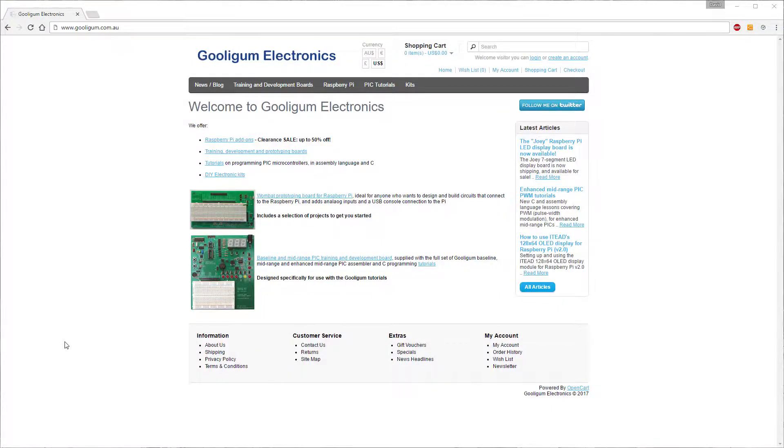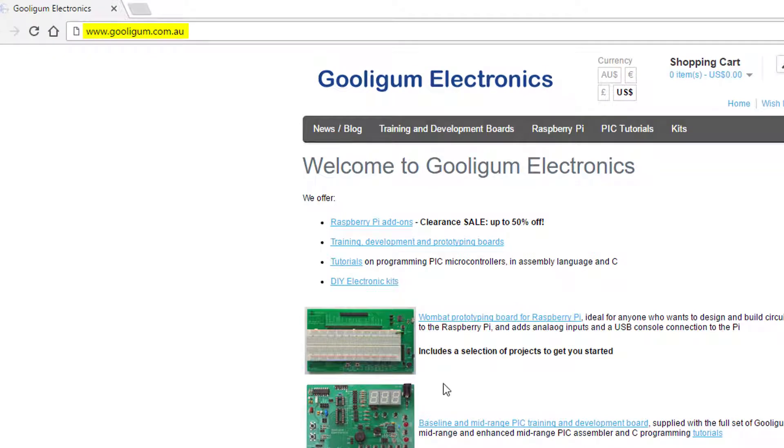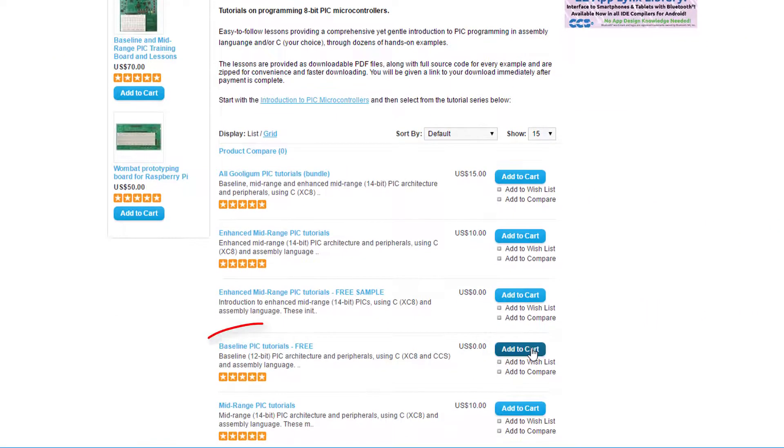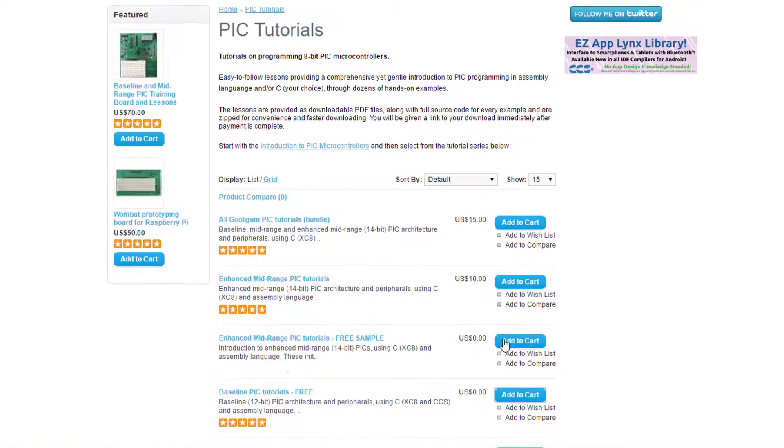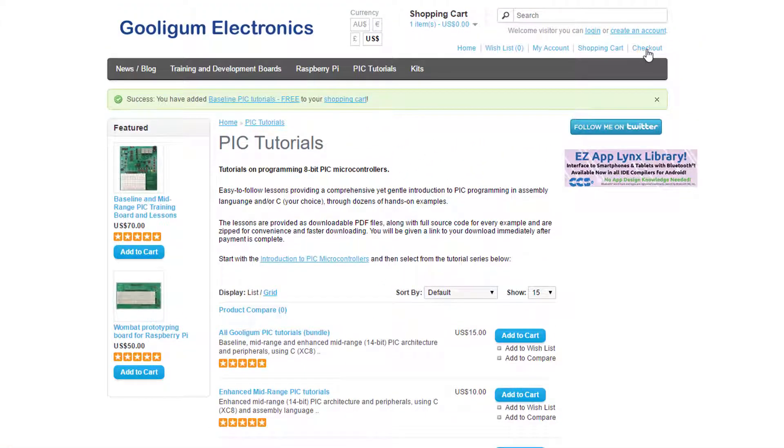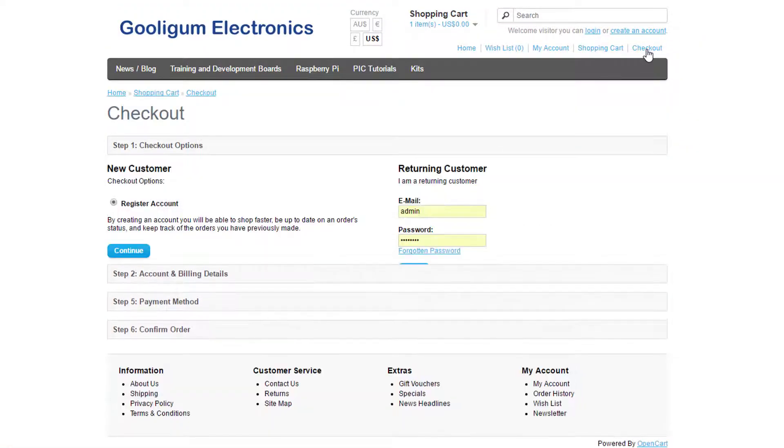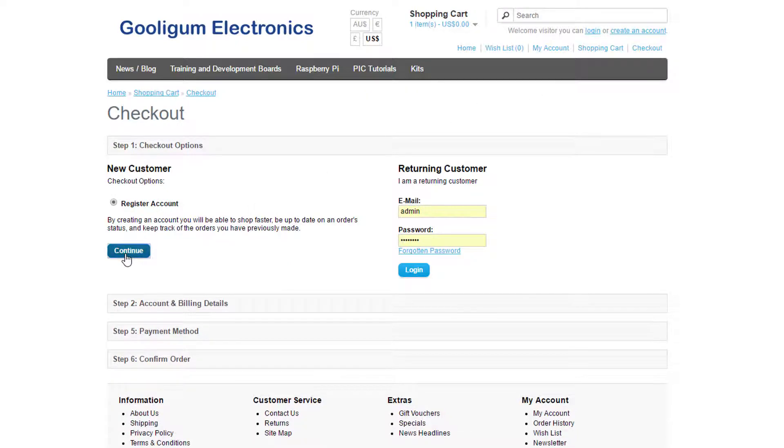First, let's download the lessons. Go to gooligum.com.au and click on the tutorials link. We'll be starting with the baseline lessons, so I'll add those to the cart and go check out. The baseline lessons are free to download, but you need to register first, so we'll go do that.